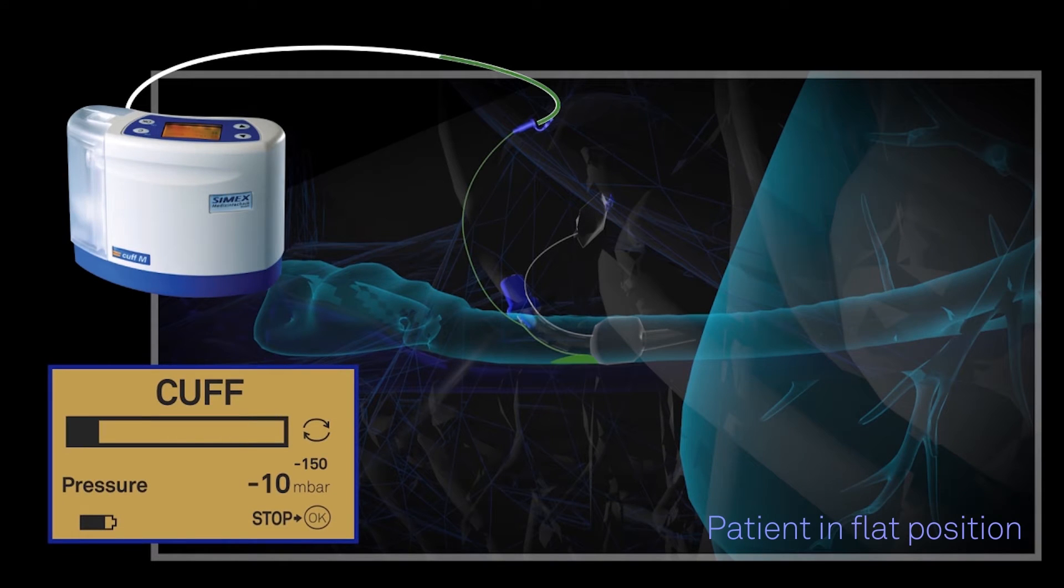When the Symax automated aspiration system is connected to the subglottic tracheostomy tube, it can be programmed and tailored to each patient's condition to aspirate the secretions from above the balloon cuff as shown here.